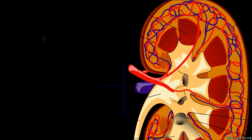In this video I want to talk about the kidney and how it operates at its smallest functional level, which is the nephron. The kidney is the organ most famous for producing or allowing us to excrete waste.